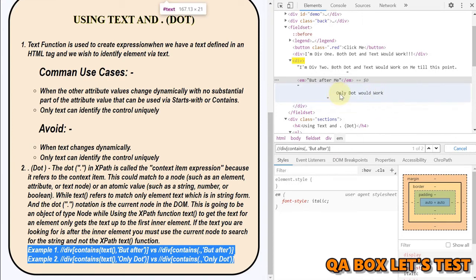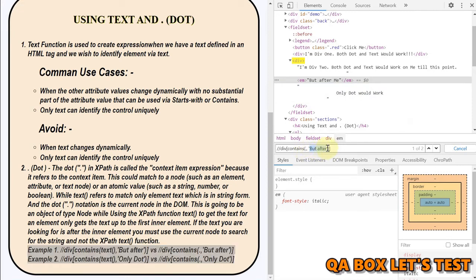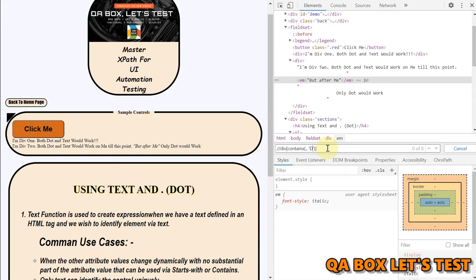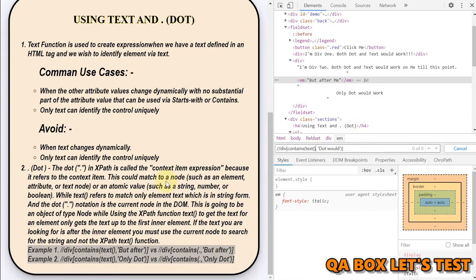Difference number two is what if I want to identify this? Can I identify this? So I'm going to say dot would. So now you could see that this dot would, I can find that using dot. But if I change it to text function, you could see that I cannot find it. And that's what I've been explained in here.